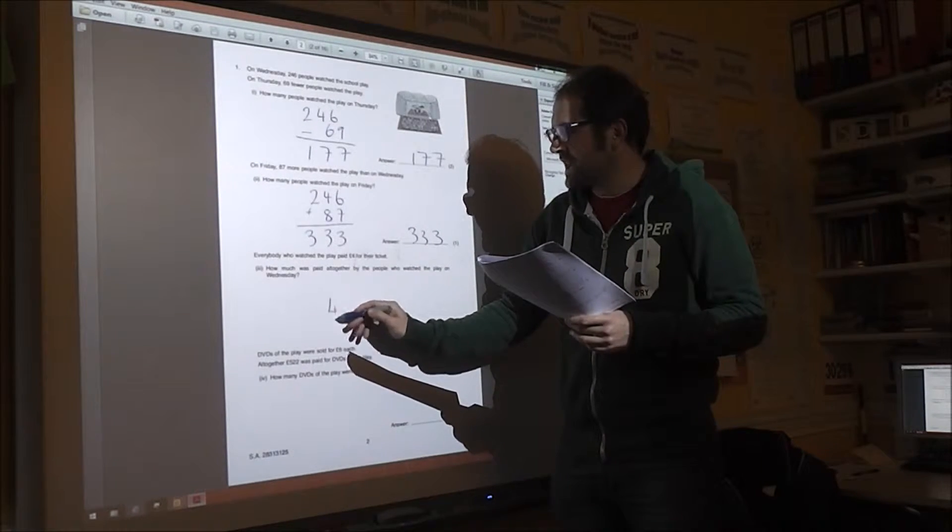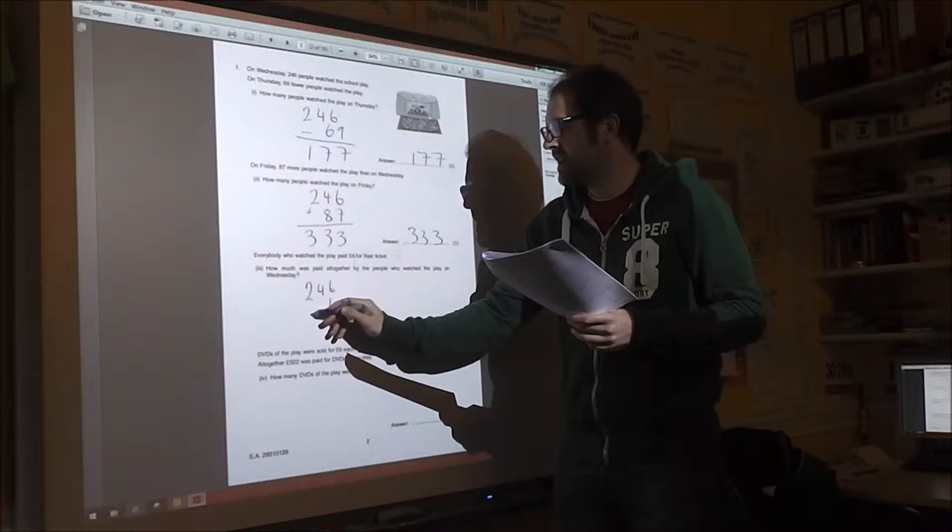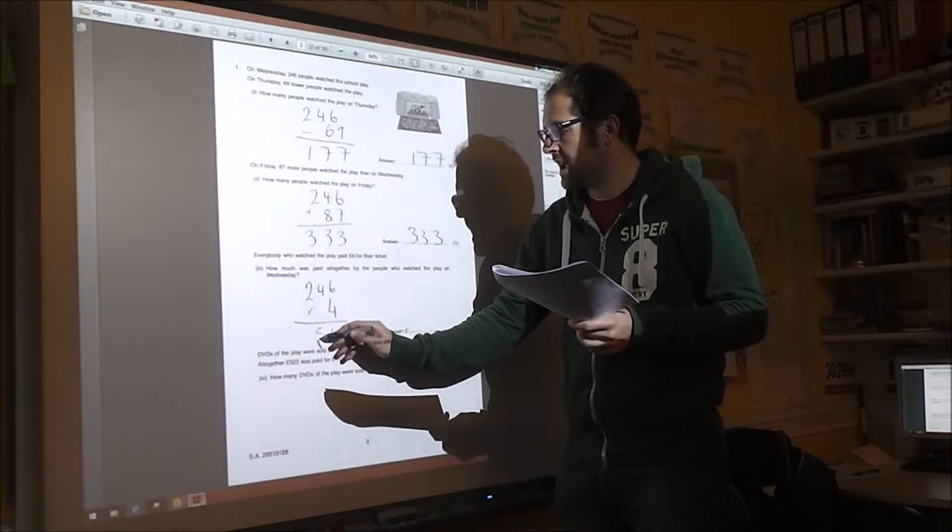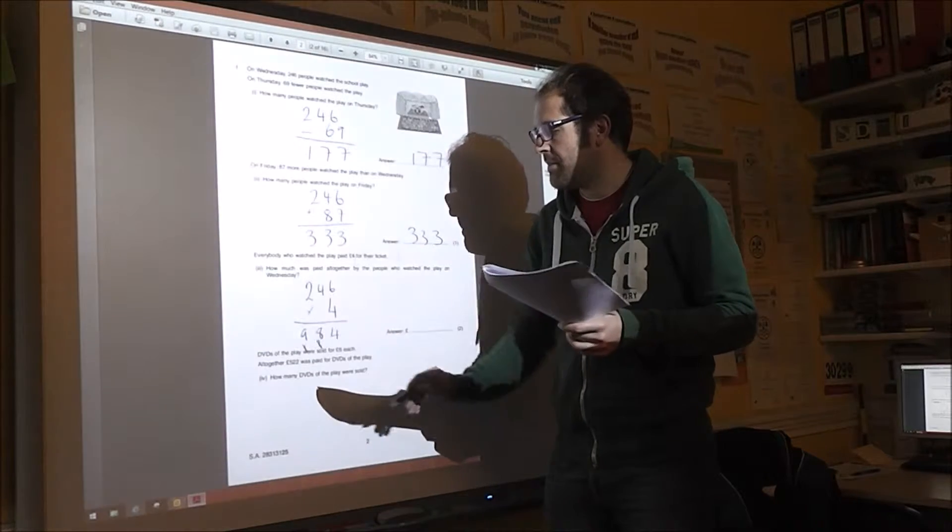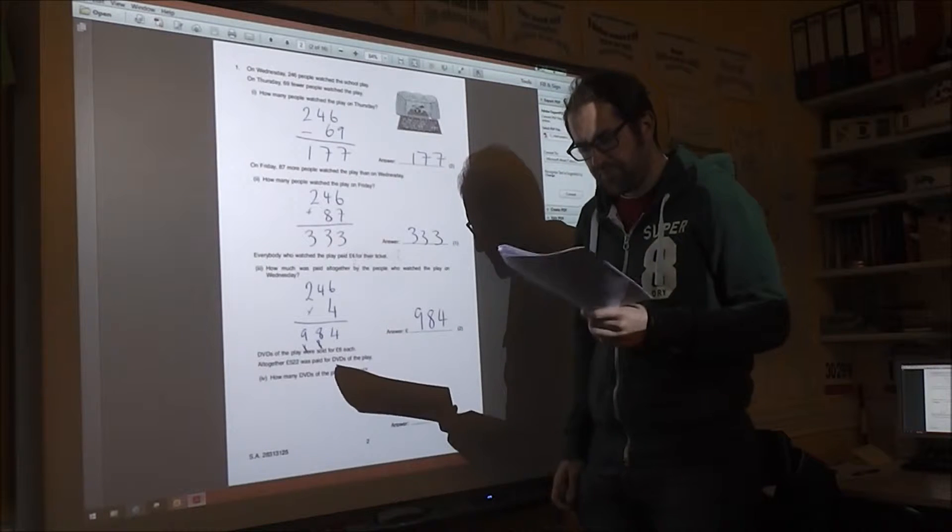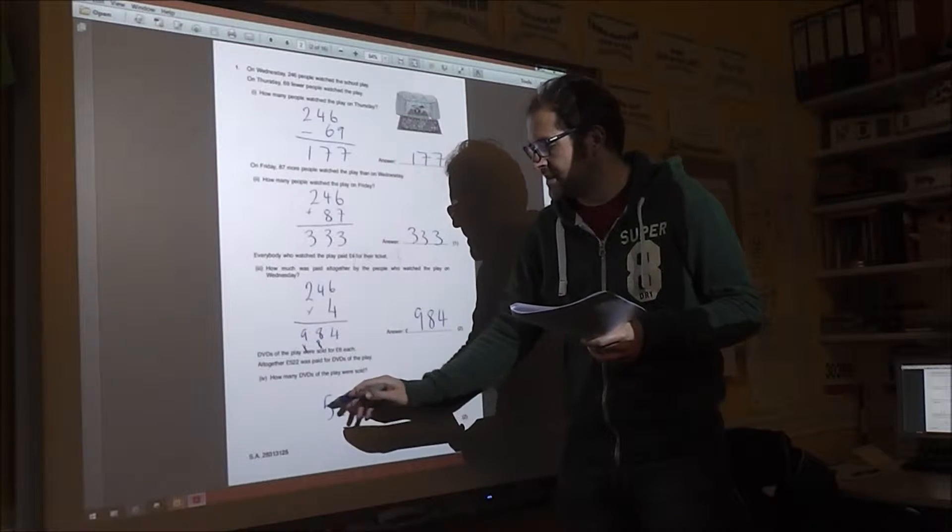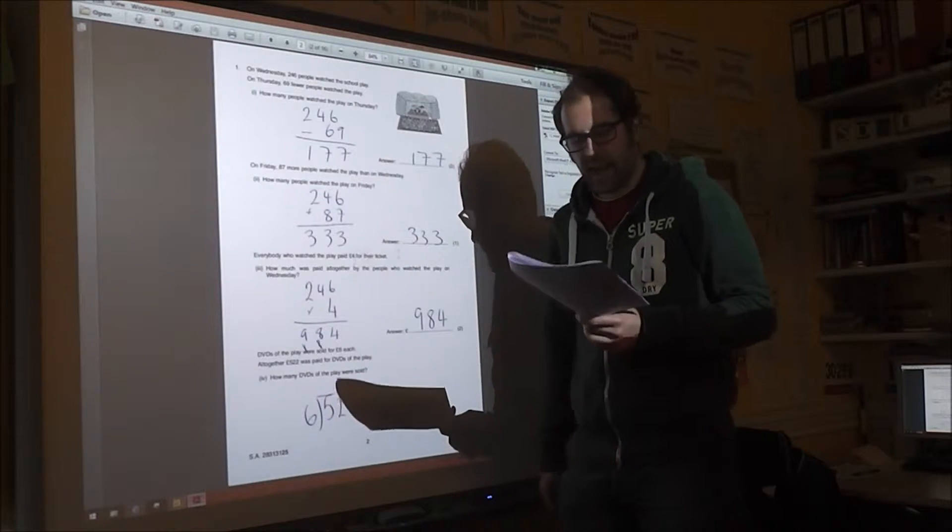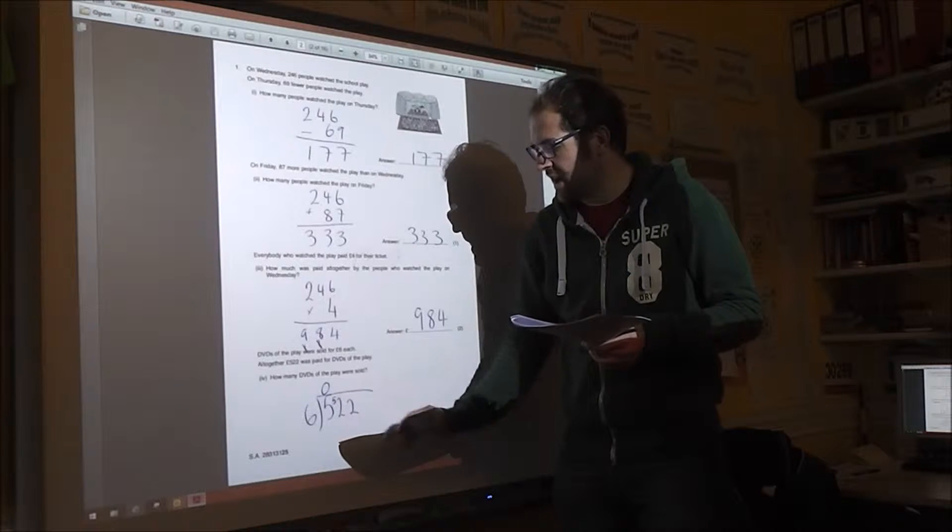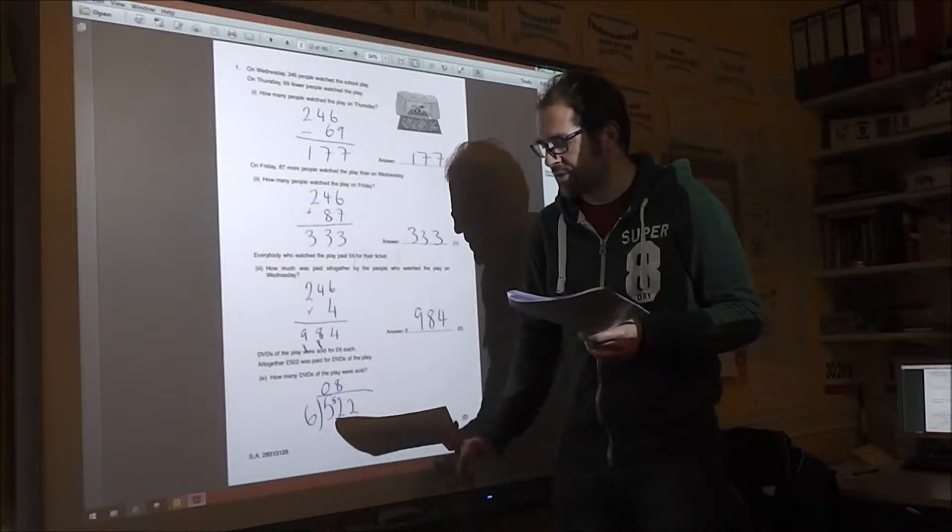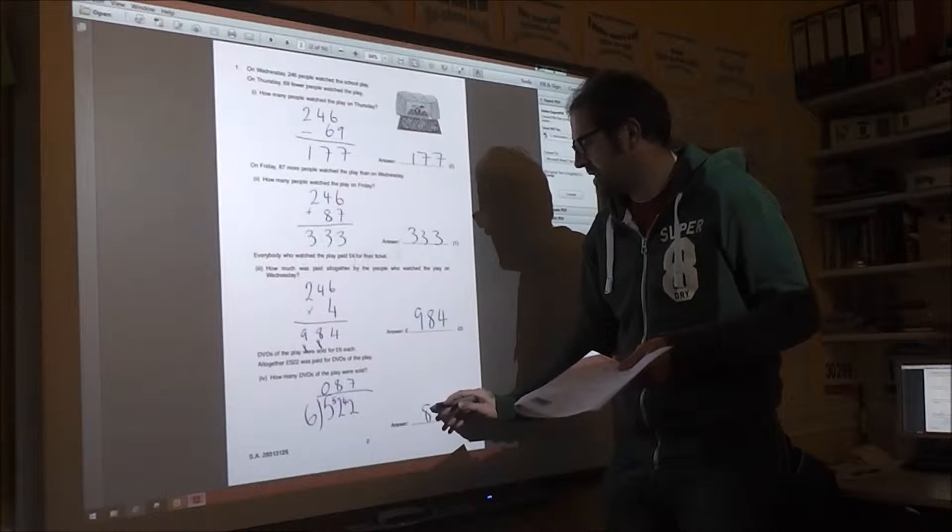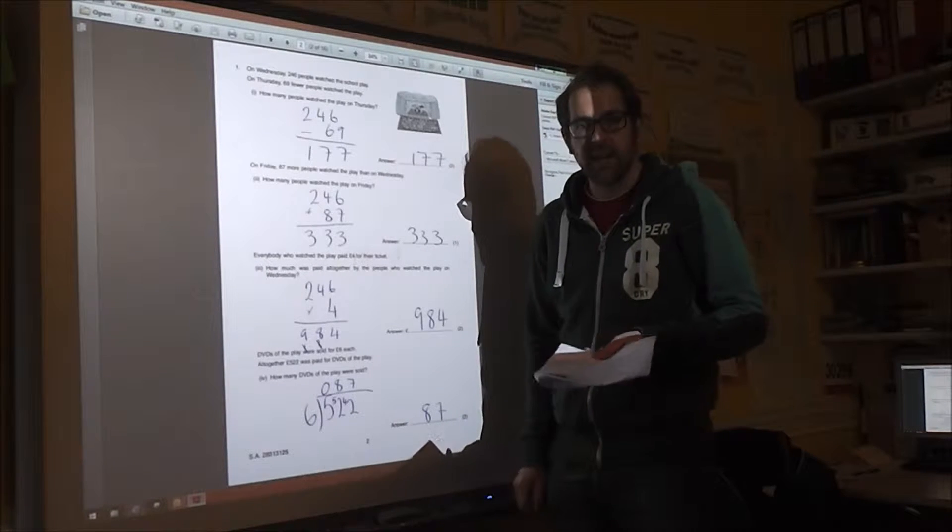£4 a ticket and there are 246. Make sure you read the question very carefully. Do your multiplication, be careful, check if you need to and make sure that you're £984. Last one is £522. There are £6 every DVD. So a bit of a bus stop here. No sixes go into five, remain to five. Eight sixes are 48, remain to four. And then seven sixes are 42. 87 DVDs were sold.